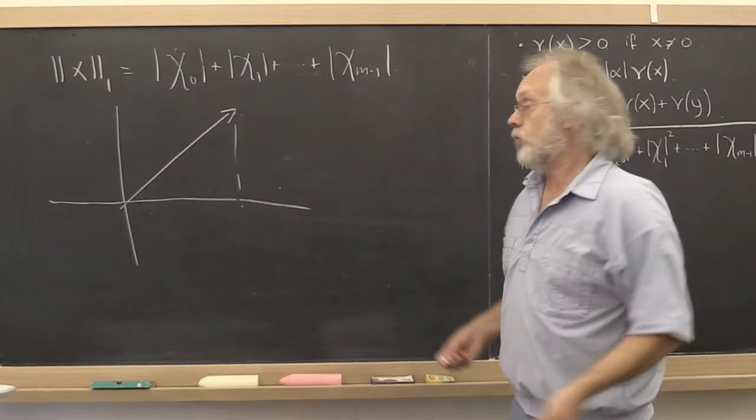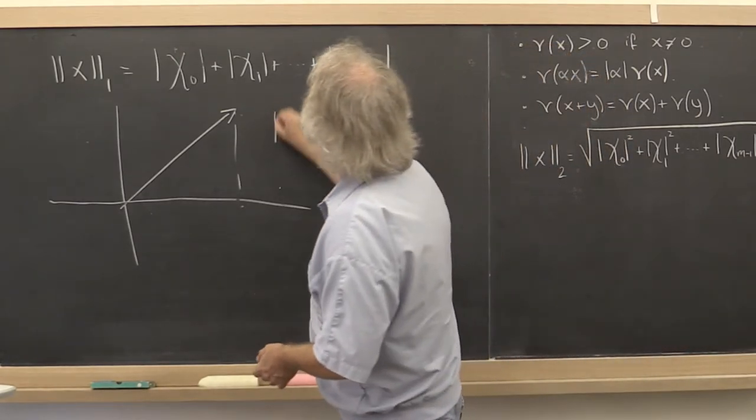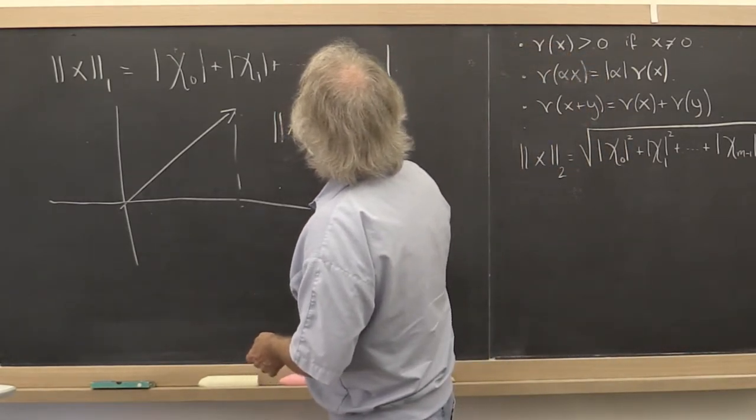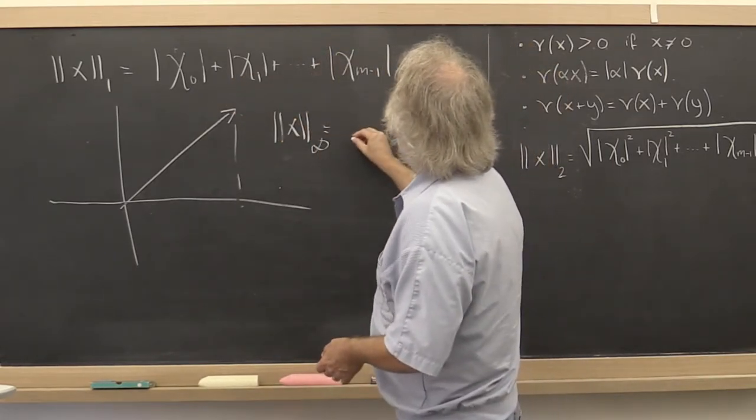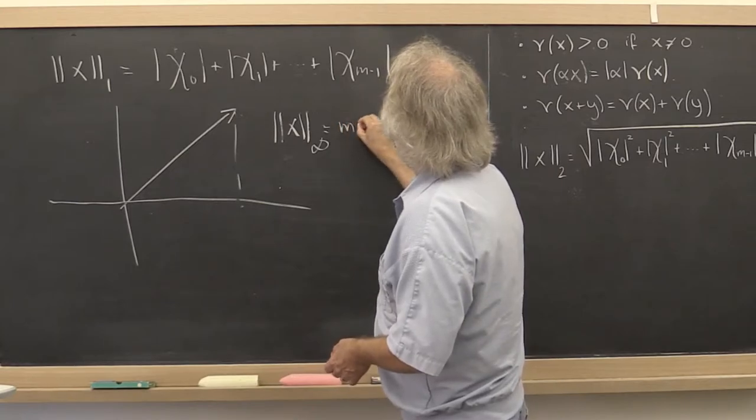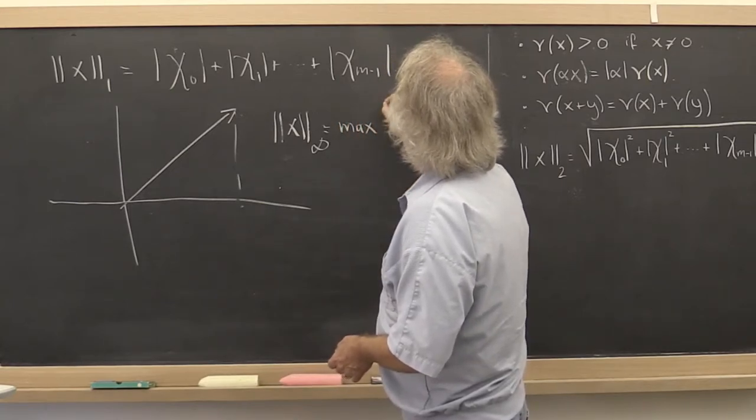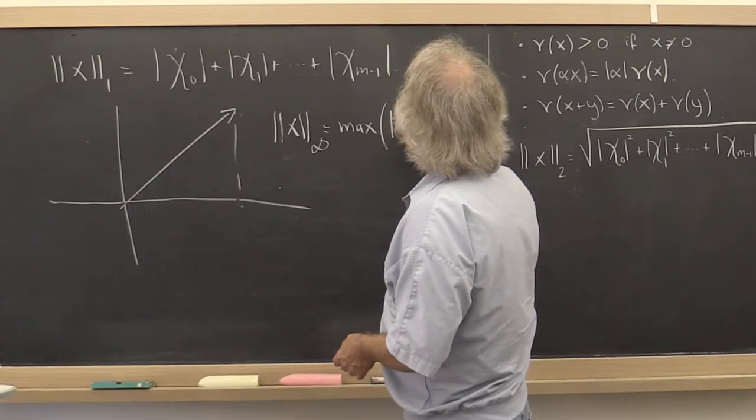Okay, so yet another norm is known as the infinity norm. And what is the infinity norm? Instead of adding the absolute values together, we take the maximum in magnitude of all of the components.